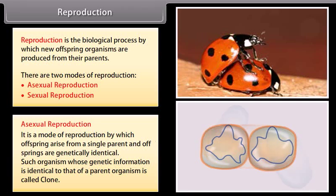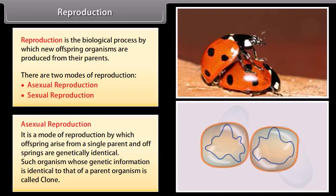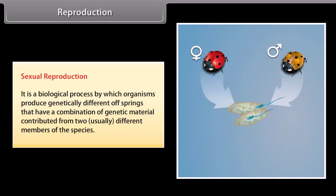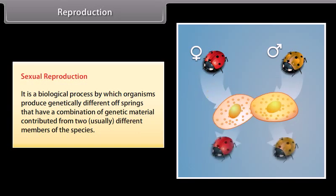Such organisms whose genetic information is identical to that of a parent organism are called clones. Sexual reproduction is the biological process by which organisms produce genetically different offspring that have a combination of genetic material contributed from two usually different members of the species.